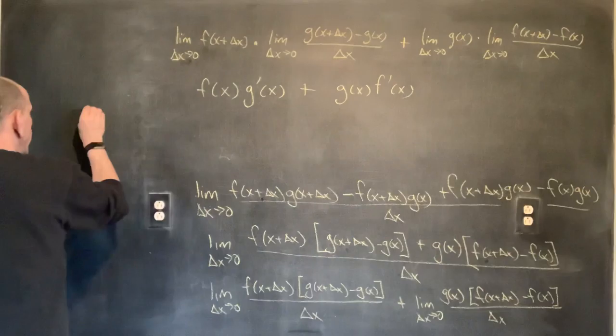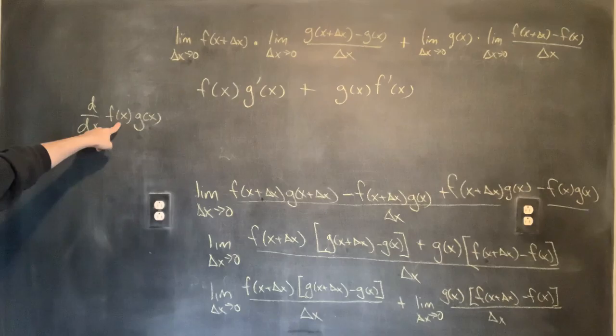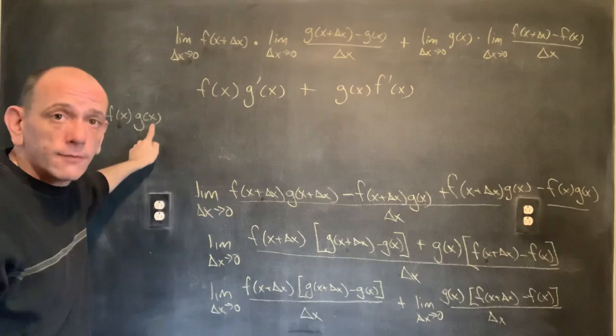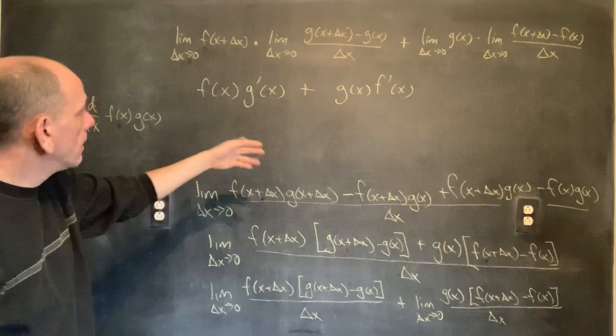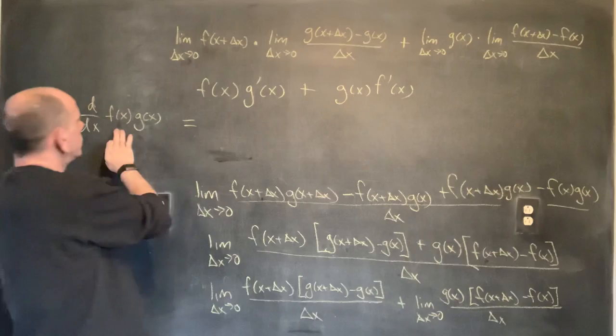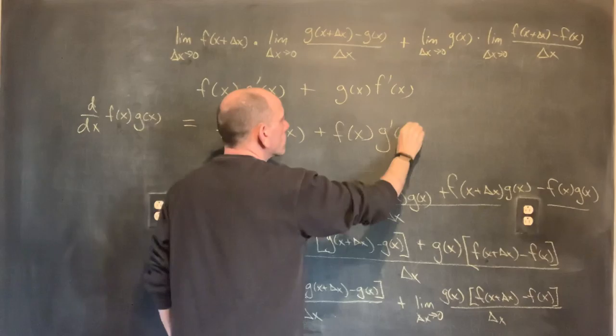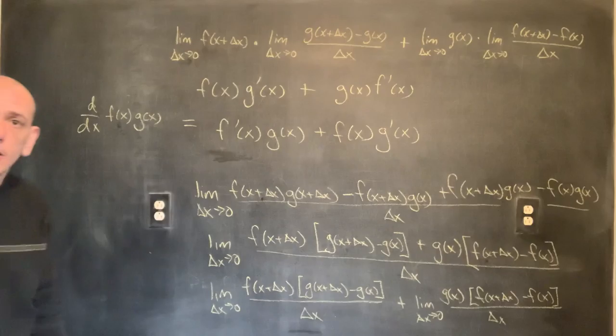For that reason, I'm going to choose to always write these in a consistent order. I'm taking the derivative of f(x)·g(x): this is the first function, that's the second function. I'll always take the derivative of the first function first, and the derivative of the second function second. That way the quotient rule is easier to remember too. So this derivative is: the derivative of the first function times the second function, plus the first function times the derivative of the second function. That's the product rule — we just proved it by definition.